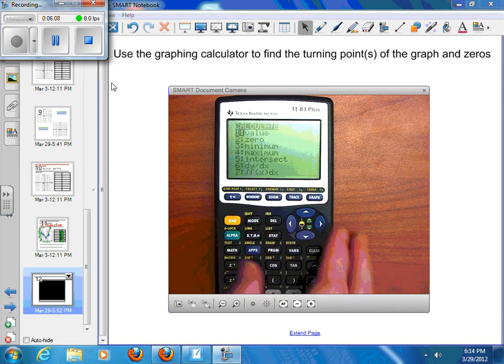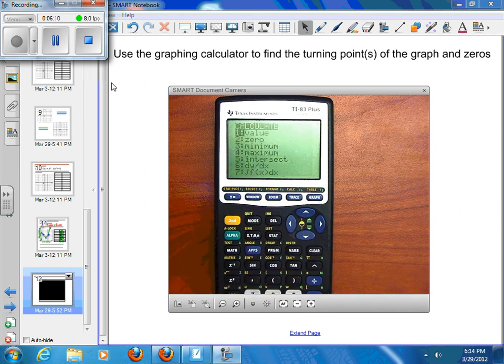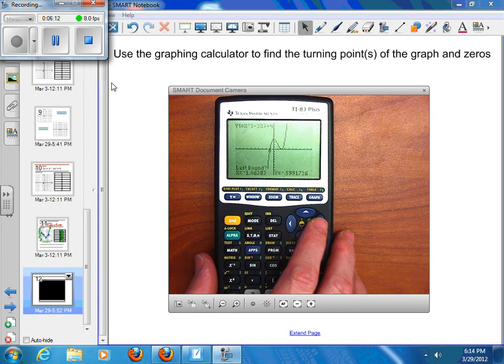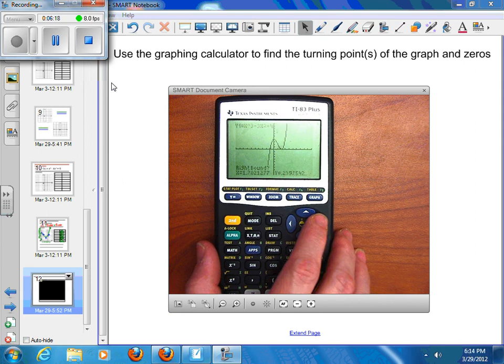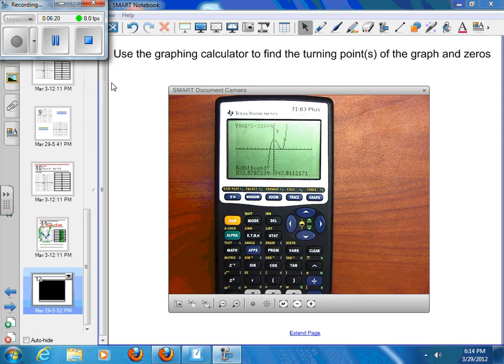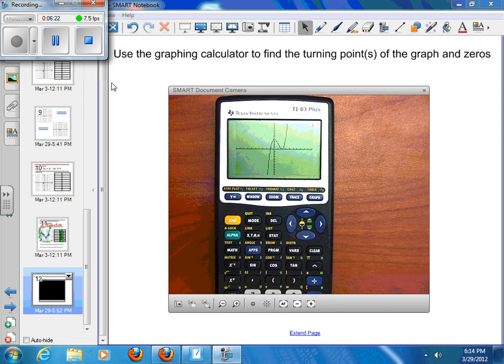So second, calculate. Again, I want to find my zero. I want to be on the left side of it. So I want to go to the next one. And then I want to be on the right side of it. And I press enter. And I take my guess. And it comes back with it being, again, 2, 0. It's 2.00006. But it's basically the zero 2, 0.